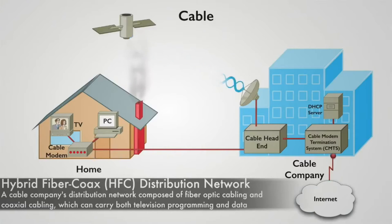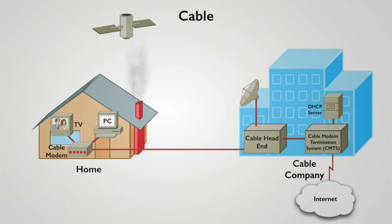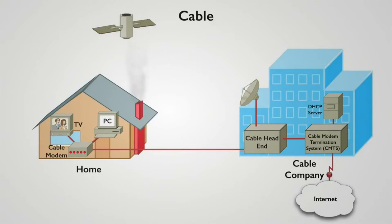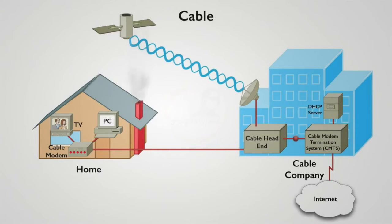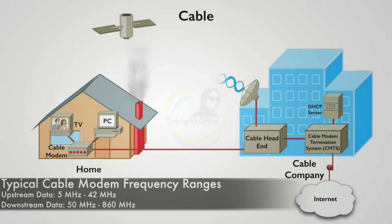On this HFC network, different frequency ranges are dedicated to different television channels, as well as to the transmission and reception of data — both upstream and downstream. A cable modem installed in your home can listen on the range of frequencies dedicated to receiving data and transmit on the range dedicated to transmitting data. Typically, upstream data frequencies range from 5 MHz through 42 MHz, and downstream data frequencies range from 50 MHz through 860 MHz.